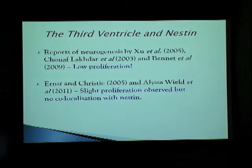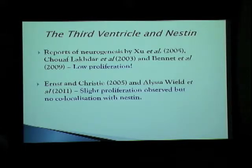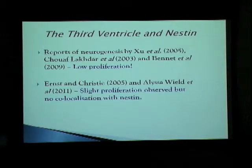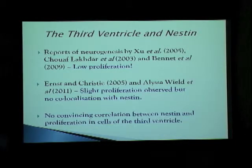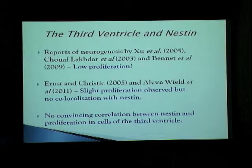So what is known about these nestin-expressing cells of the third ventricle? There have been several reports of neurogenesis by different groups on these cells. But till now, all the data is not conclusive because these cells appear to be proliferating at a very low rate. So we're not sure whether it's these nestin cells which are proliferating or something else. Several groups observe slight proliferation but with no co-localization with nestin. Till date, there is no convincing correlation between nestin and proliferation in cells of the third ventricle, which is why I moved on to approach vimentin.